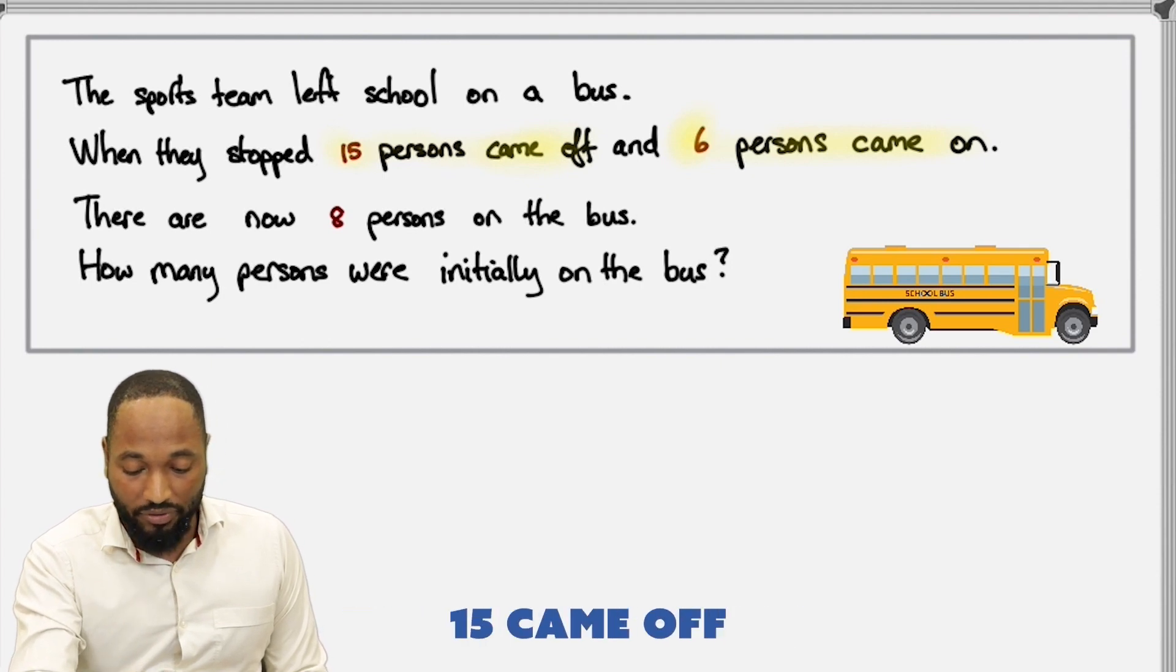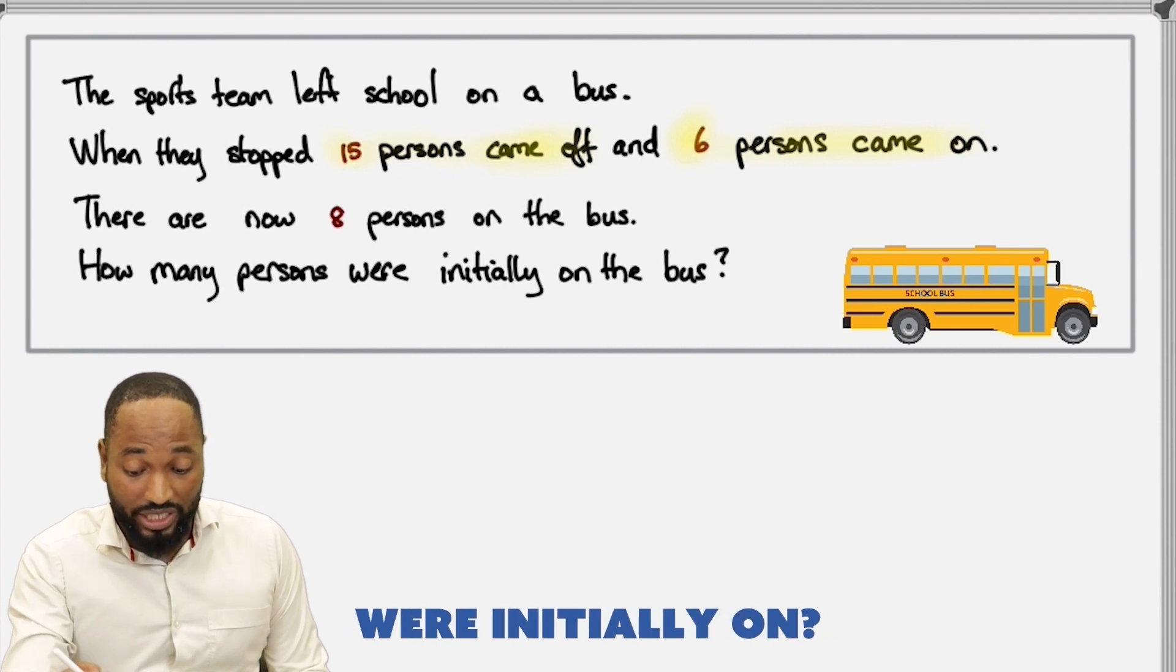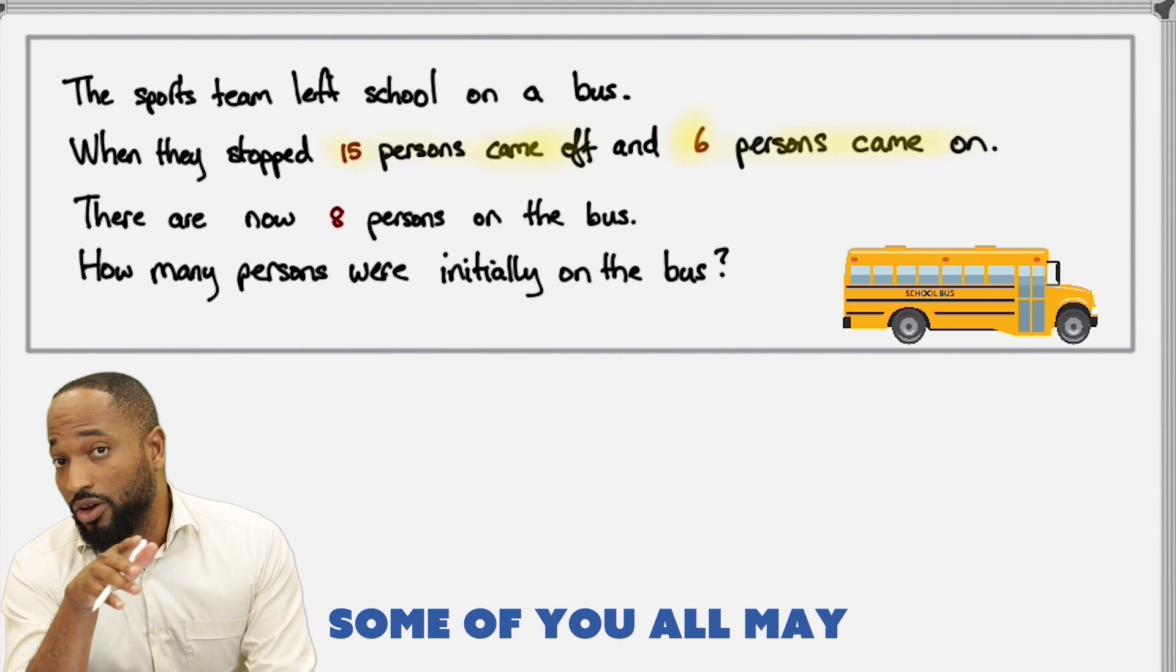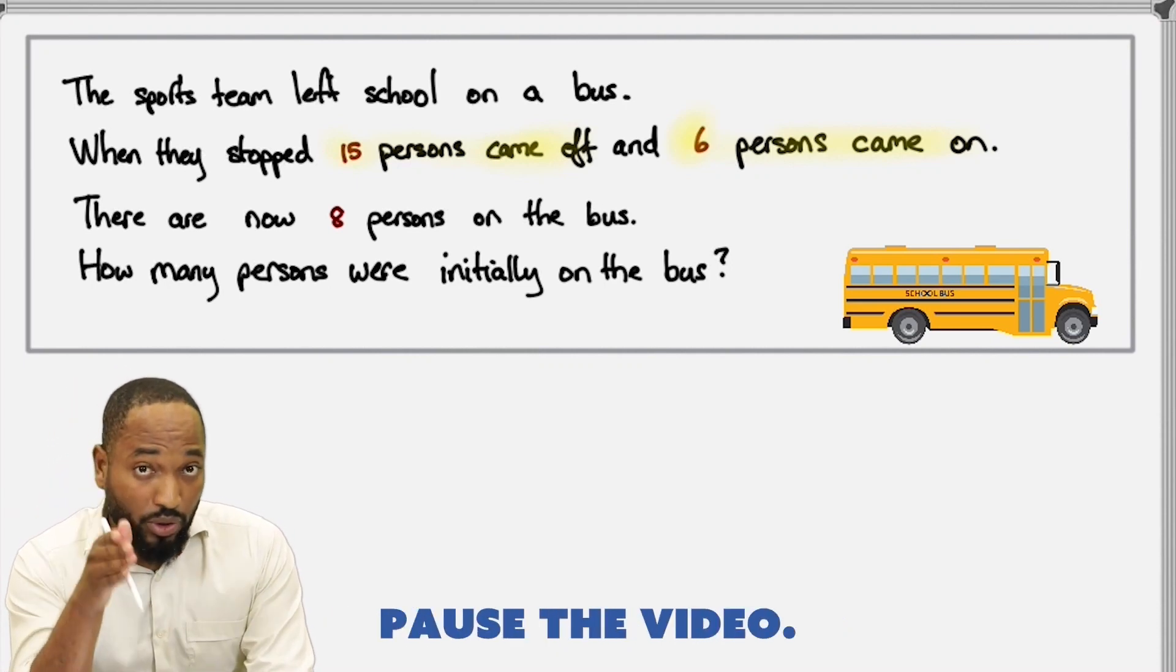When they stopped, 15 persons came off and 6 persons came on. There are now 8 persons on the bus. How many persons were initially on the bus? Pause the video and see if you can get it. Some of you may have done it already. If you haven't, pause the video and get this done.